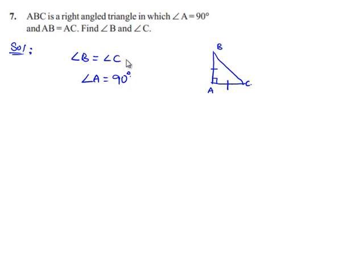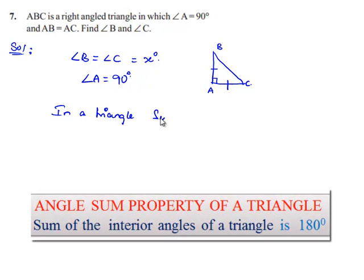Let us assume that angle B equals angle C equals x degrees, which is the value we have to find out. In a triangle, we know that the sum of angles equals 180 degrees.